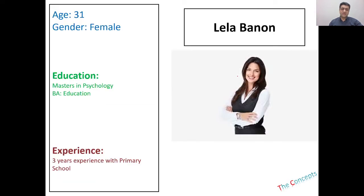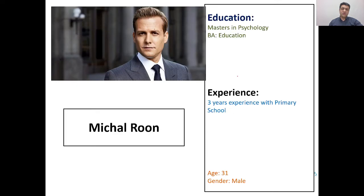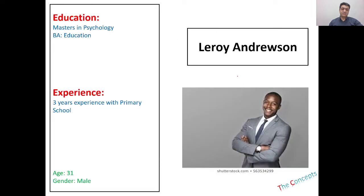This is the second candidate, the third applicant, the fourth, the fifth, and the sixth. These are the six CVs. You can shortlist two people that you personally think are the best for the Montessori teacher position.